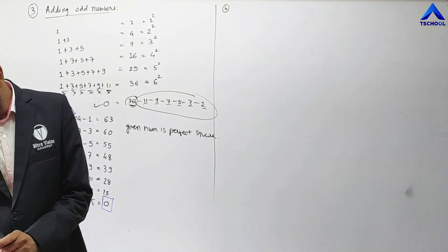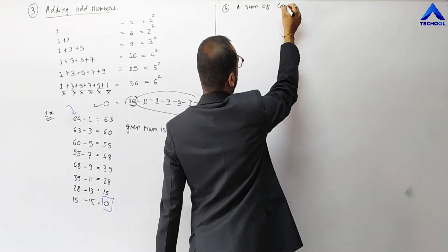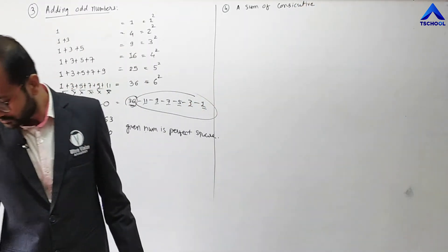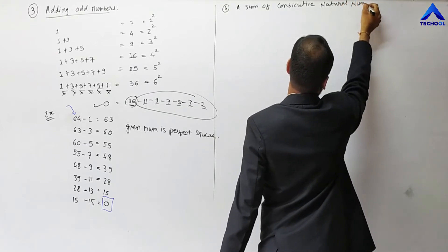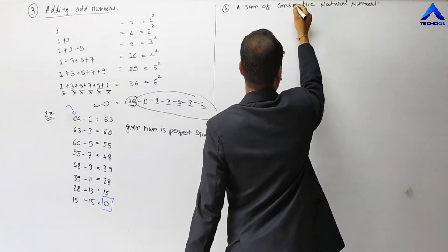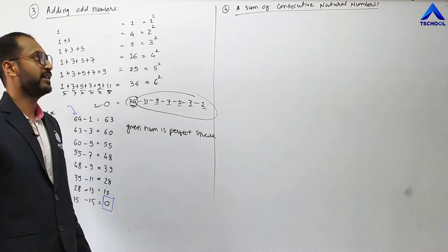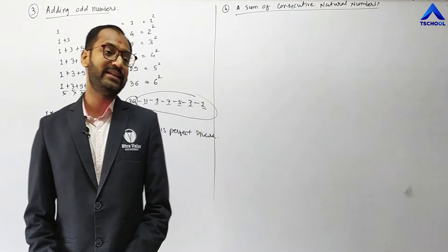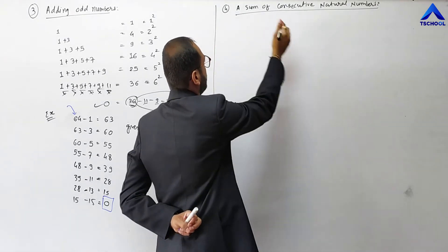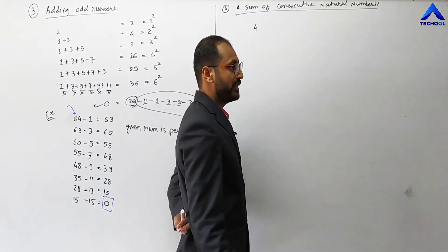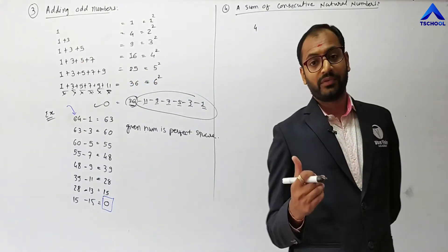Now let me move on to a new interesting pattern: the sum of consecutive natural numbers. We are making the sum of consecutive natural numbers. If I take a perfect square number like 4, there is no consecutive addition for it.